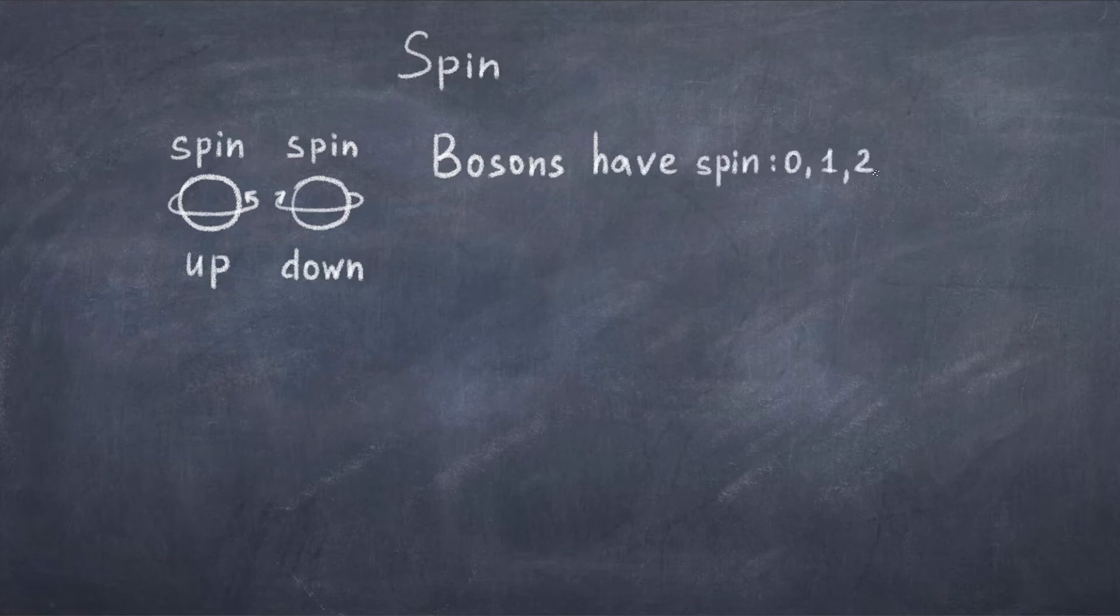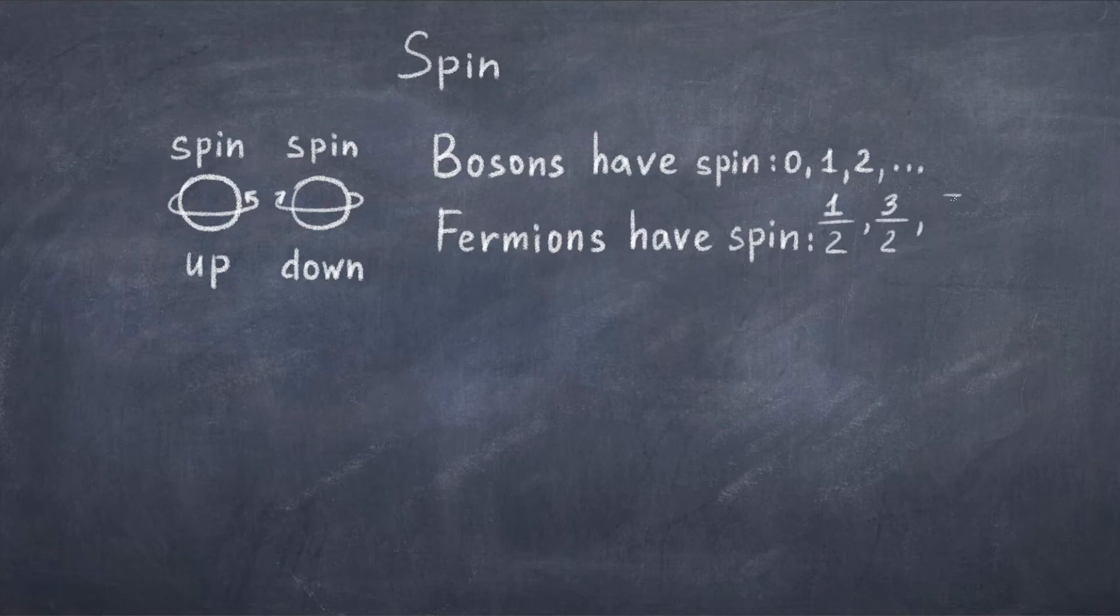Each particle can either spin in one or the other direction. Usually one calls one direction the up state and the other direction the down state. Particles however are not like balls. And this example is just an analogy of how to interpret it. Spin is an intrinsic property, but the spin analogy helps with the understanding.